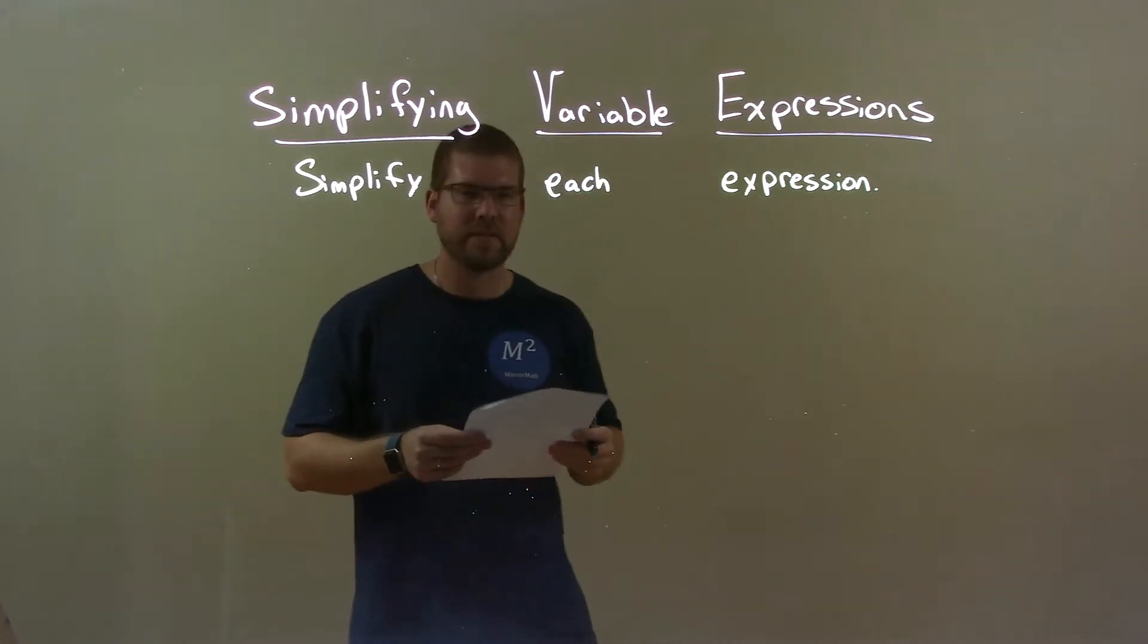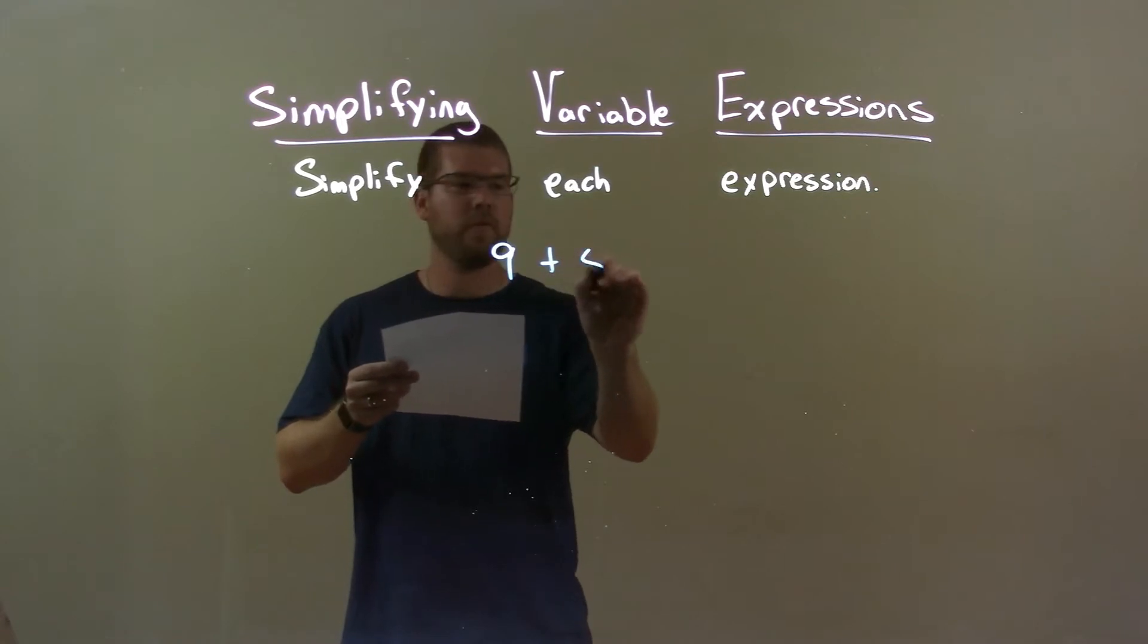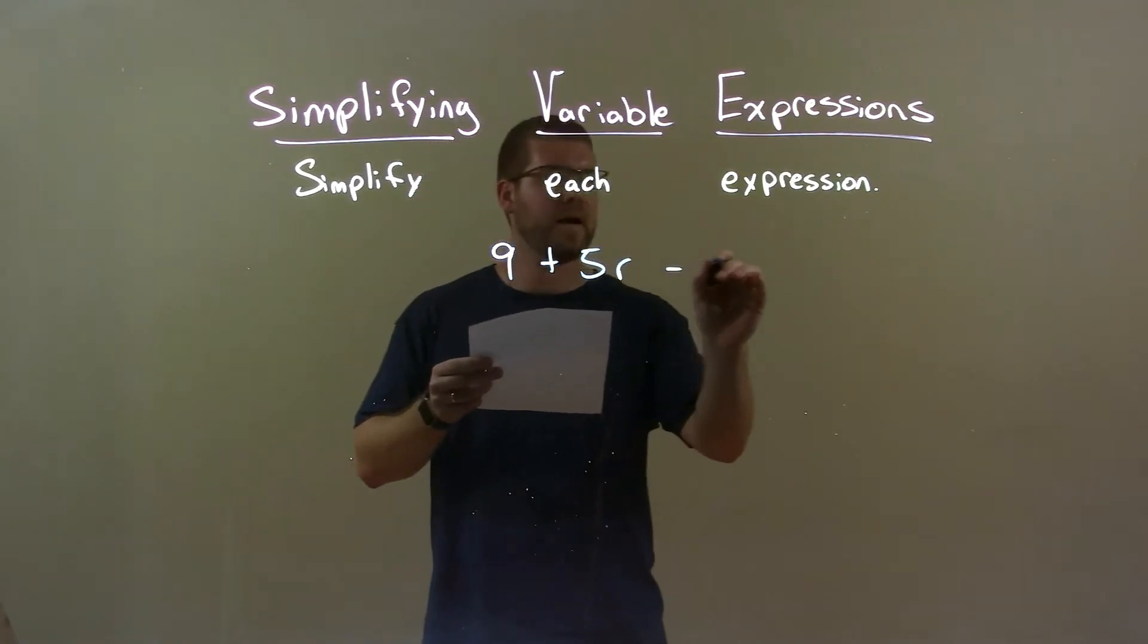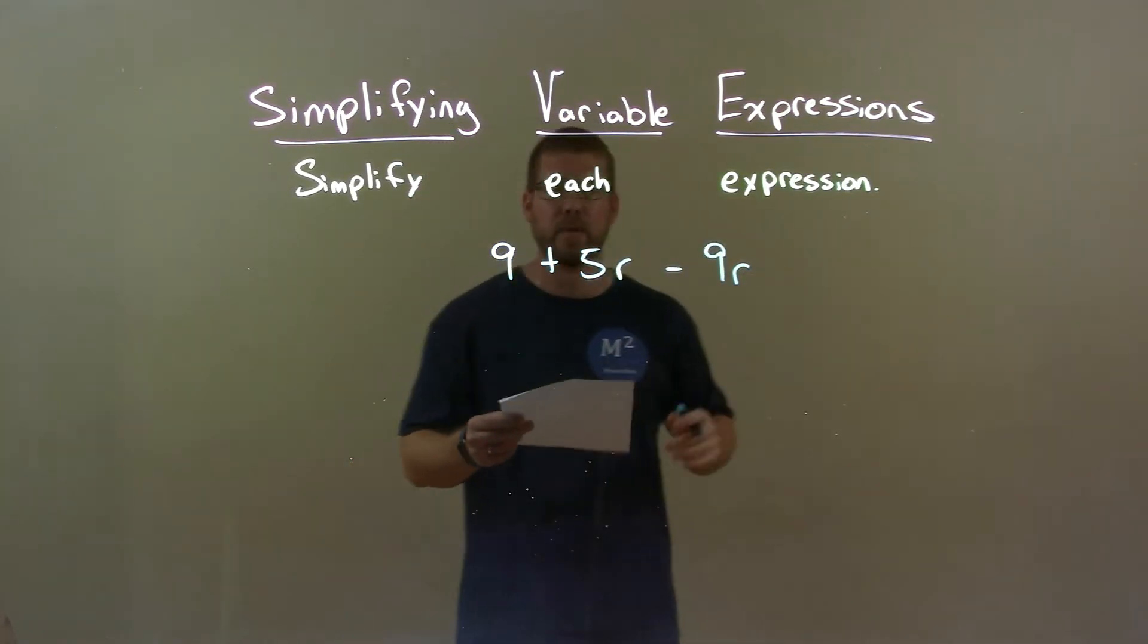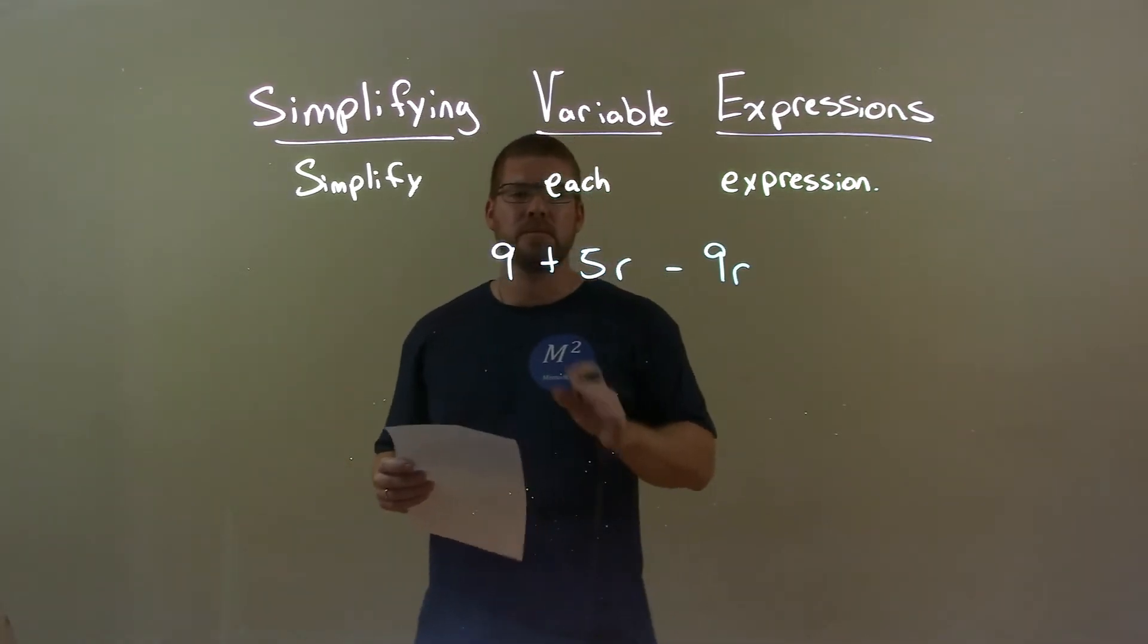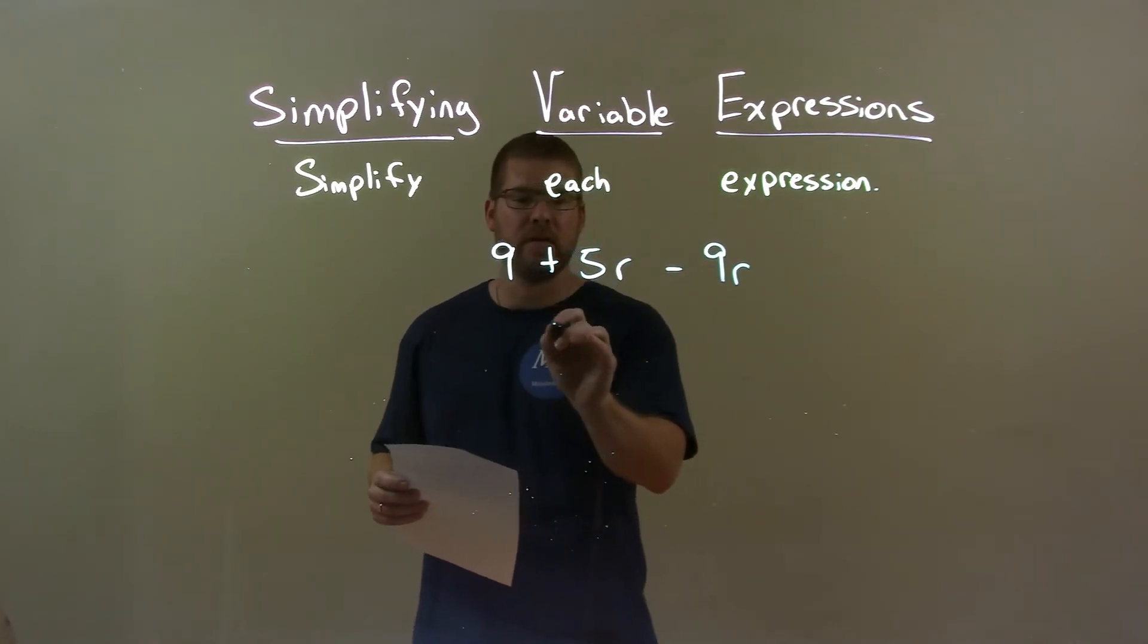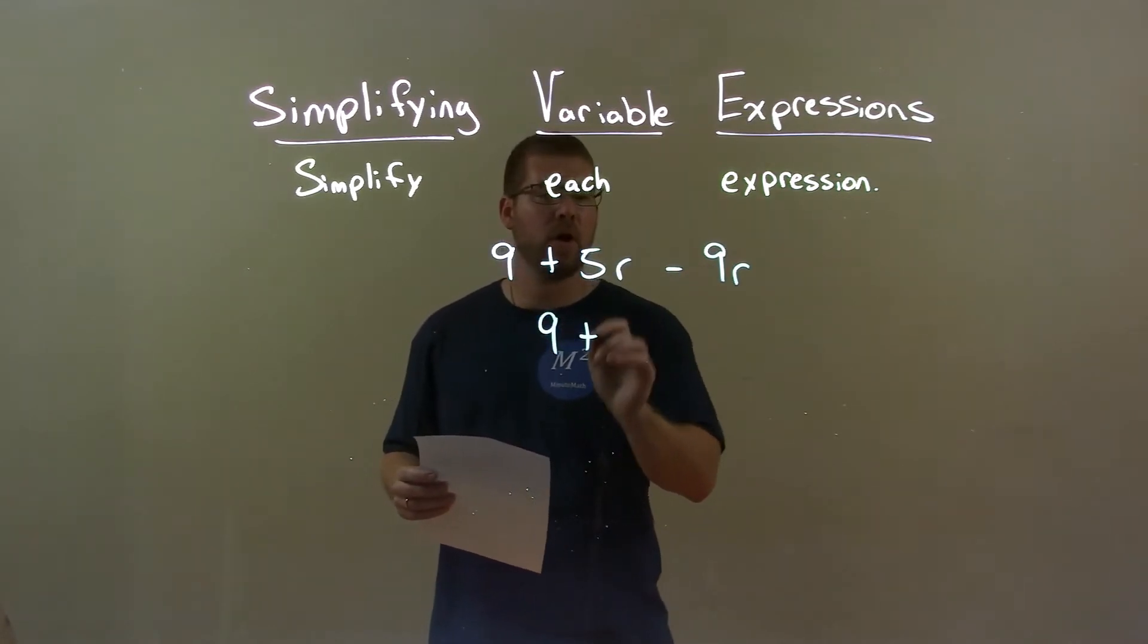If I was given this expression: 9 plus 5r minus 9r. Well, first thing, we can only combine our like terms. There's only one 9 but there's two terms with the r's. So the 9 is just going to come down first and now let's deal with the r's.